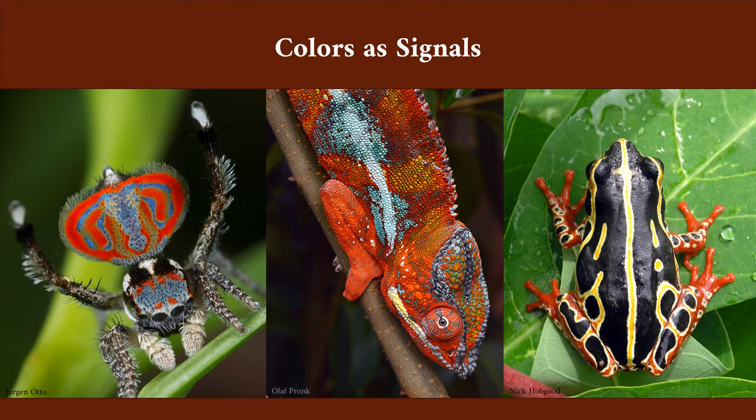In these previous examples, the animals are using colors as signals, and that's actually very common in nature. But what is color, and how can it be used as a signal?